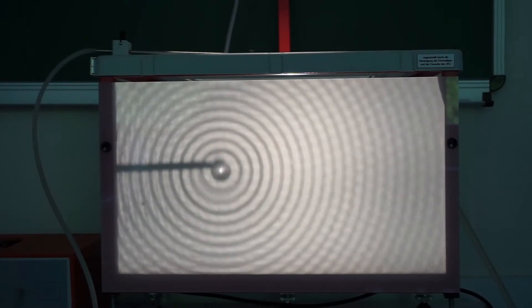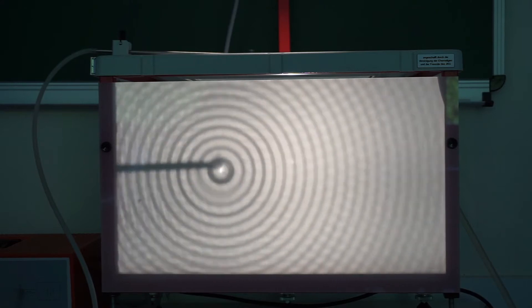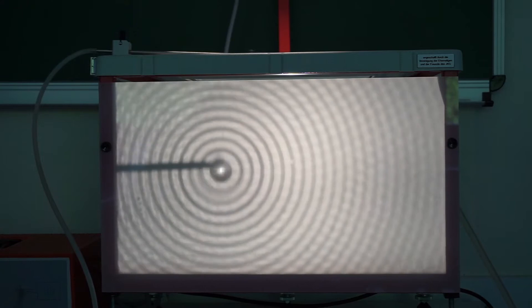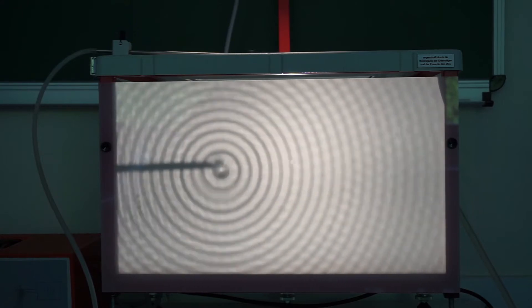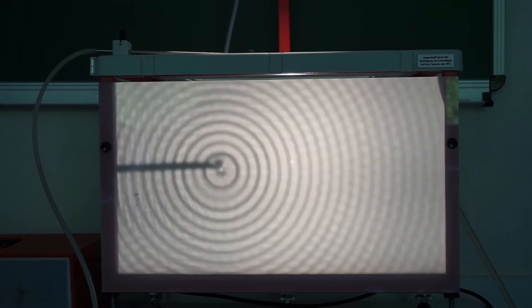Hier sehen wir jetzt sehr schön diese kreisförmigen Wellenfronten, die sich ausbreiten. Wie gesagt, die hellen Kreisringe sind die Berge, da ist die Wasserfläche oben, wirkt wie eine Sammellinse und die dunklen Kreise sind die Täler.